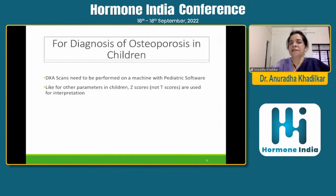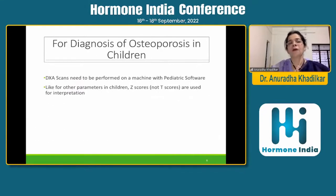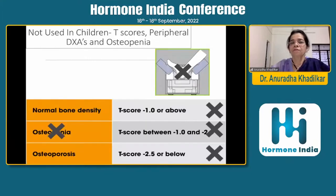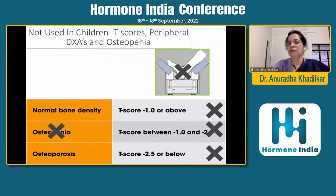For diagnosis of osteoporosis in children, DEXA scans need to be performed on a machine with pediatric software. Many times I get sent scans that can't be analyzed because they were not done with children's software. Like other parameters in children, you need to use Z-scores. T-scores, which you commonly see in adult DEXA scans, are not used in children — because a T-score is a comparison with a healthy adult aged 21 to 30. You also cannot use a peripheral DEXA in children, and the word osteopenia is not used in children.